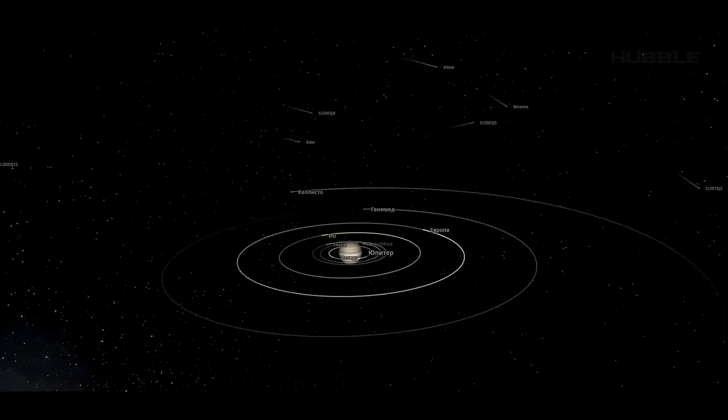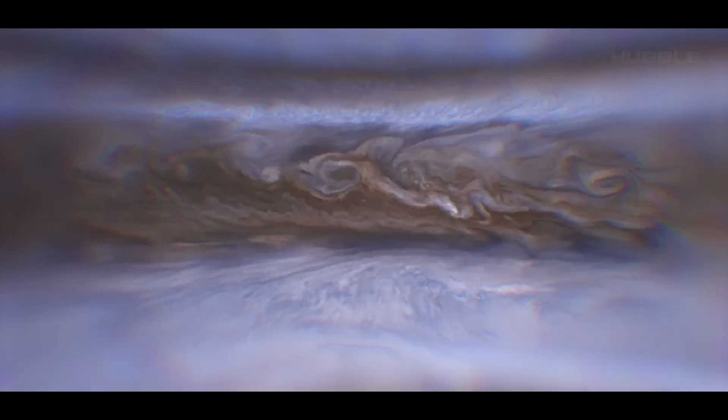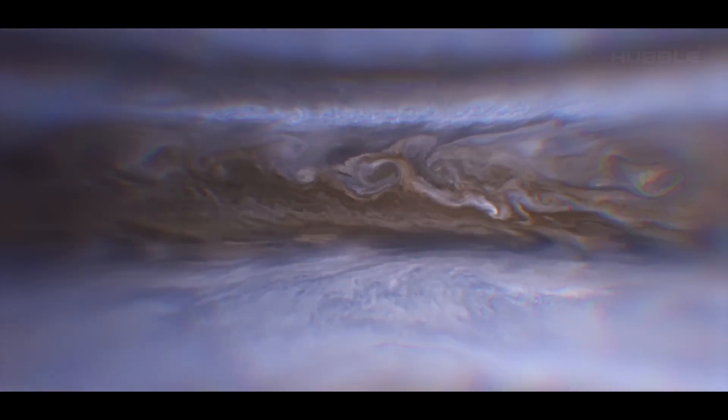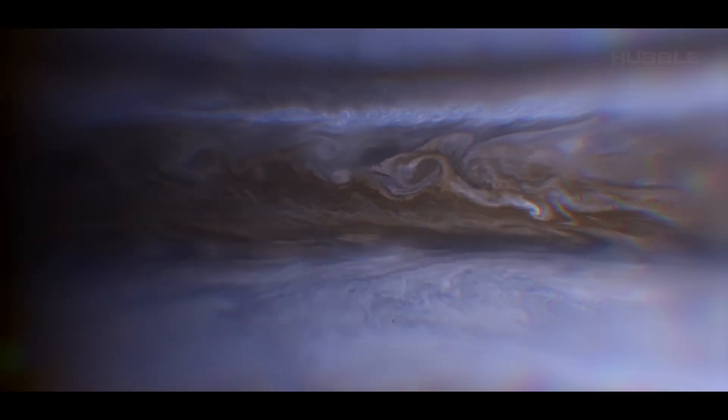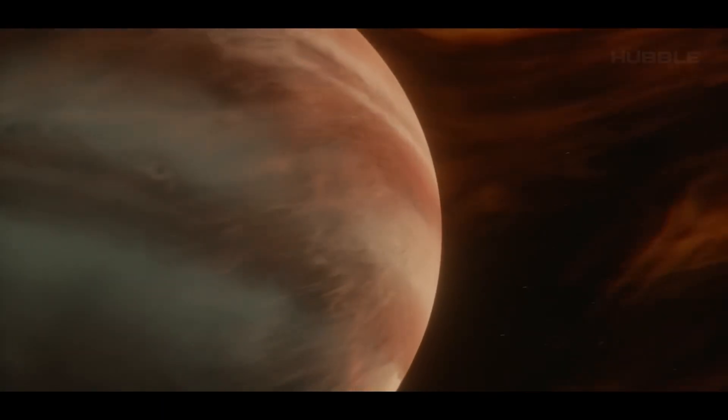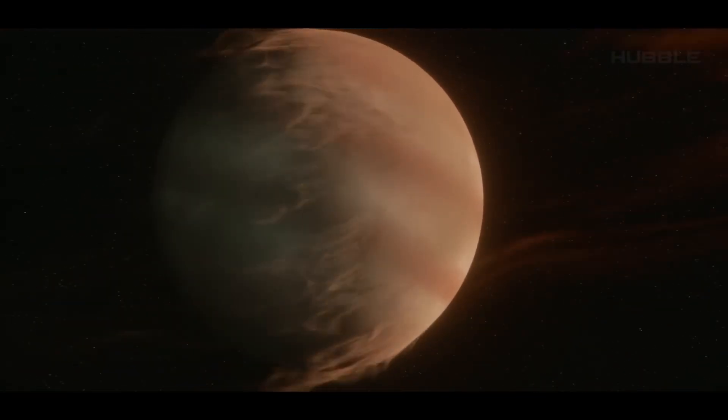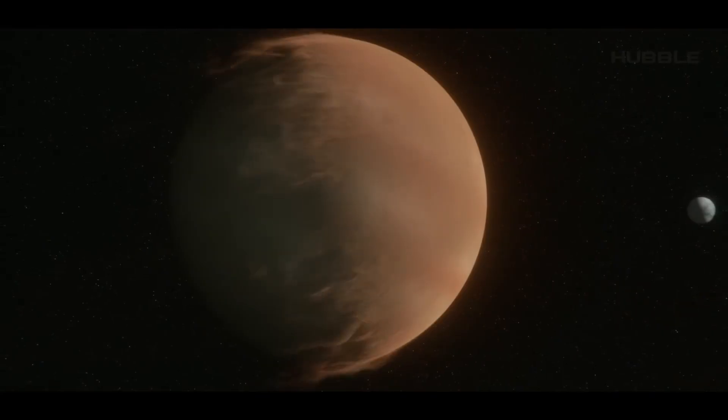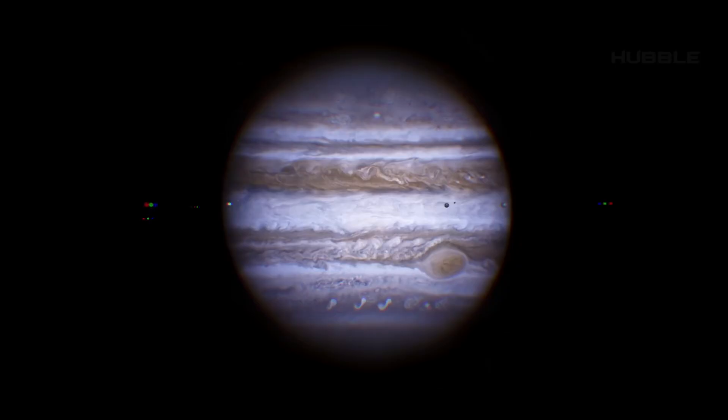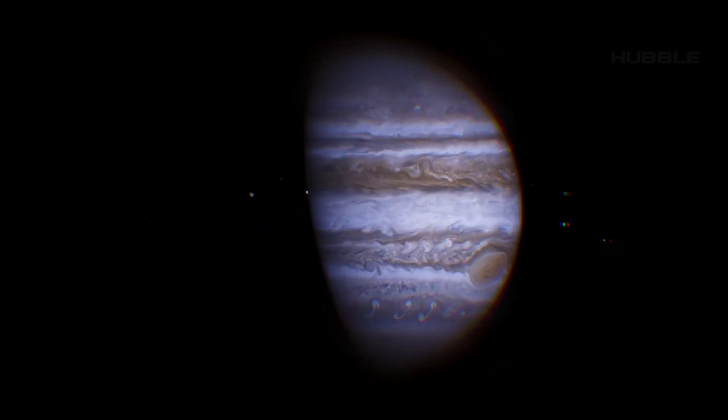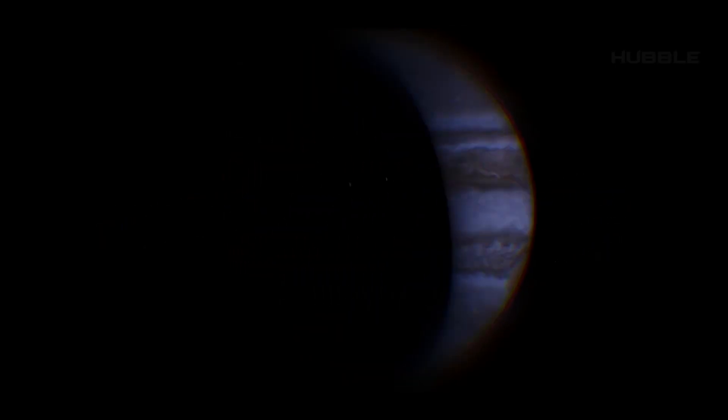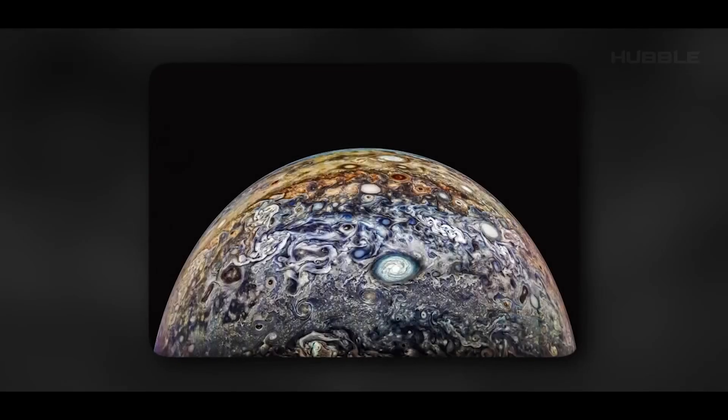But why are we only talking about moons? I wonder, what about Jupiter itself, the planet for which Juno made this incredible journey? Did the probe send new data about the giant? Of course it did. It's hard to find a more hurricane-like atmosphere among the planets of the solar system. So the updated information mostly concerned Jupiter's atmosphere.